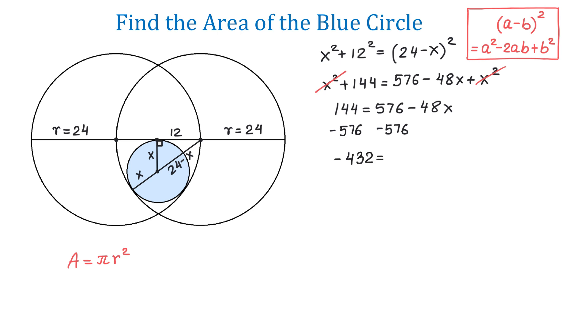And on the right side, 576 and negative 576 will cancel, and we will have negative 48x. Now, let's divide both sides by negative 48. Then, x will be equal to 9.